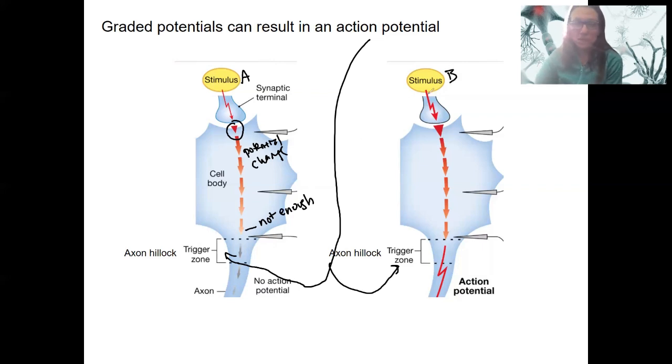Stimulus B, this is bigger, as indicated by a thicker arrow in this case. So because it's a larger stimulus, it travels diminishing still. It's still diminishing, but it is just, in this case, hypothetical, no numbers. It's big enough to trigger an action potential.